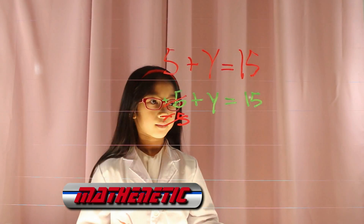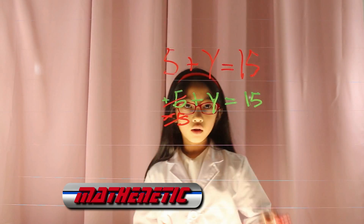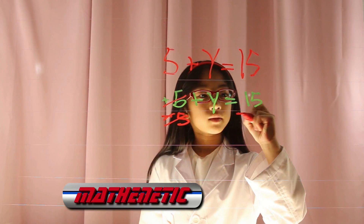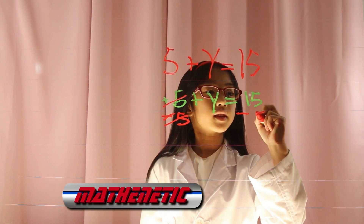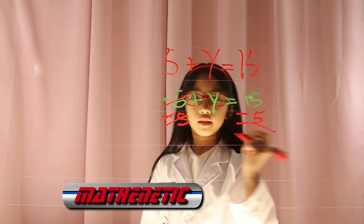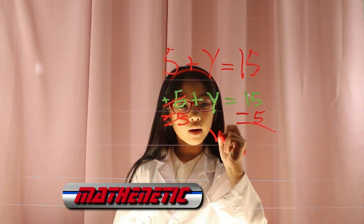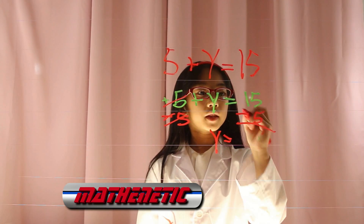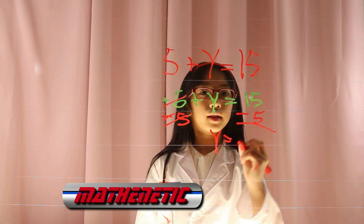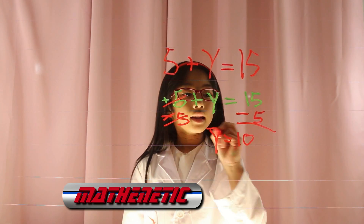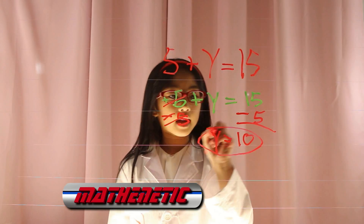You also subtract 5 on this side. Bring the y down, bring the equal down. 15 minus 5 is 10. y equals 10.